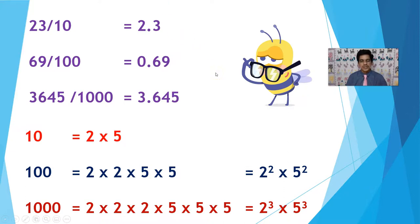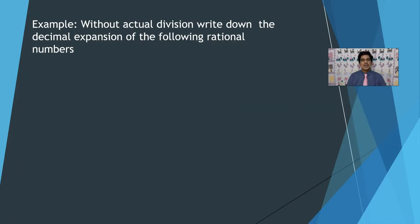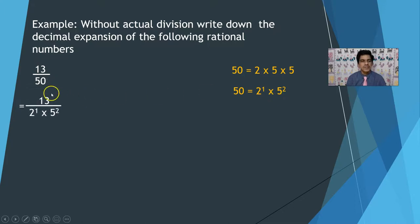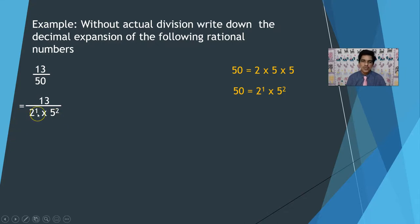Keeping these things in mind, let us solve one problem without actual division: write down the decimal expansion of a given rational number. For example, 13 by 50. Factorize the denominator: 50 is 2 into 5 into 5, which is 2 power 1 into 5 power 2. So we have 13 by 2 power 1 into 5 power 2. Comparing: 2 squared by 5 squared is 100, but we have 2 power 1 and 5 power 2, so we need one more 2.